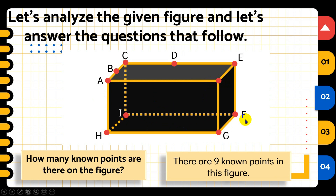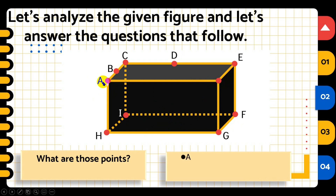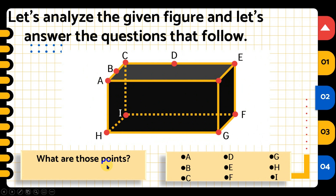The 9 known points are: point A, point B, point C, point D, point E, point F, point G, point H, and point I. You can name them in alphabetical order or in the order you see them. Remember, the question asks for distinct or known points — only those with names are counted.